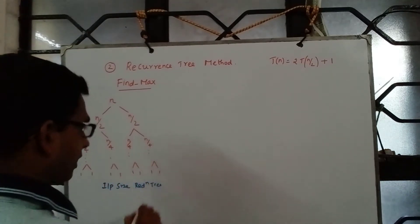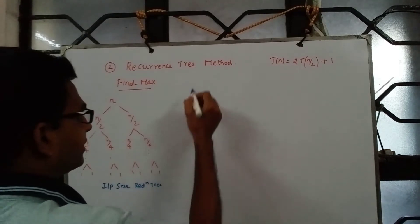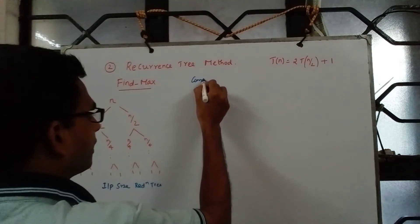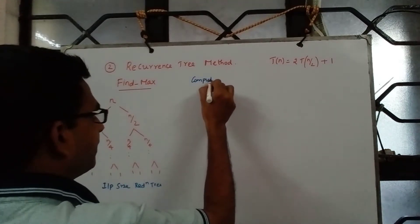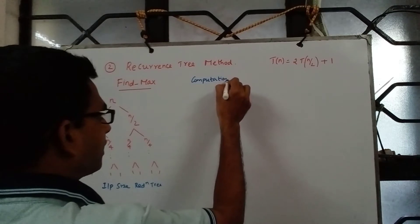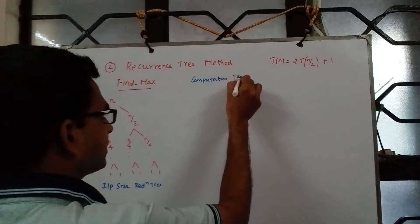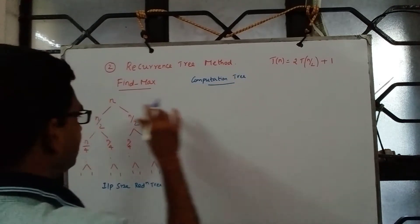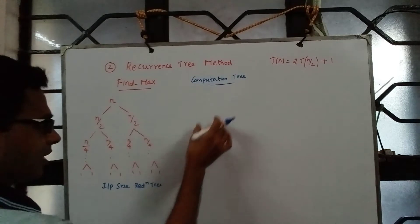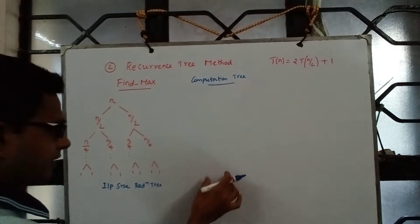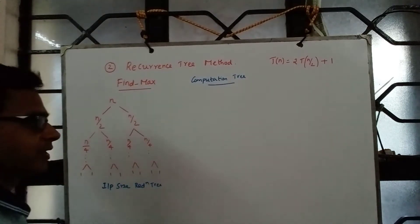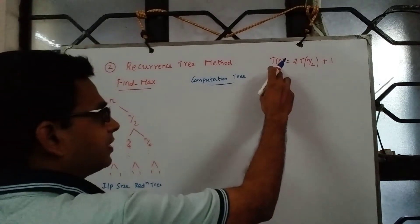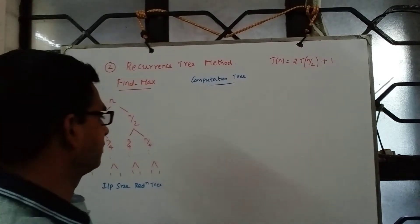Now let us look at the computation tree. The computation tree will actually calculate how much cost we incur at each stage, and the sum of that is precisely the value of T(n).